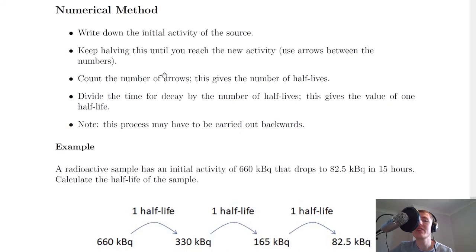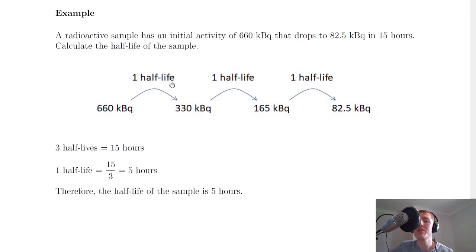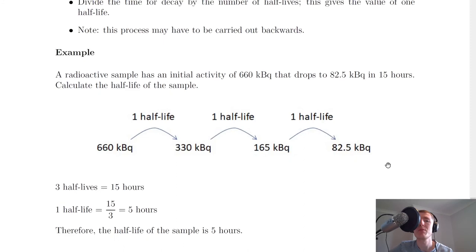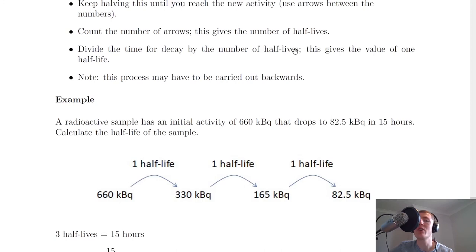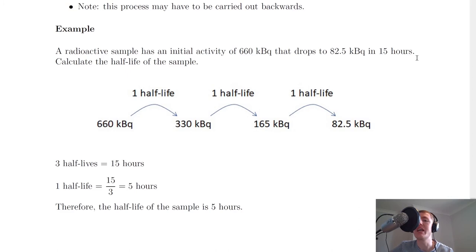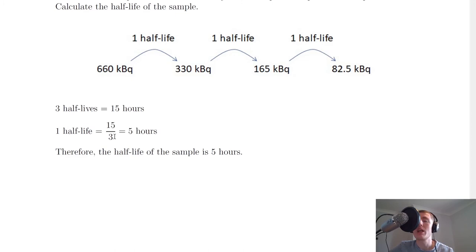Next, count the number of arrows — this gives the number of half-lives. We have one half-life, then another, then another, giving a total of three half-lives. Then divide the total time for decay by the number of half-lives to find the value of one half-life. The activity drops in 15 hours, so three half-lives equals 15 hours, meaning one half-life equals 15 divided by 3, which gives 5 hours. Therefore, the half-life of the sample is 5 hours — it takes 5 hours for the activity to decrease to half its original value.